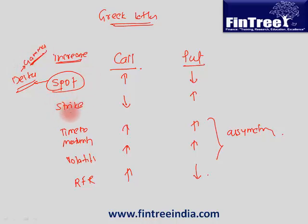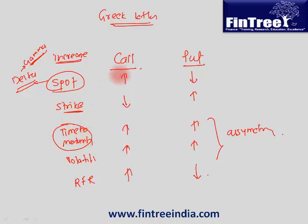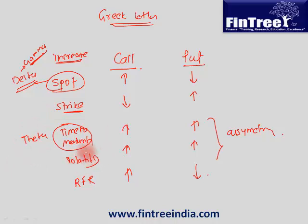There is no specific Greek for strike price because strike price remains constant — it does not change. The relationship between time to maturity and call and put option is given by a Greek letter called theta. The relationship between volatility and call and put option is given by a Greek letter called vega.